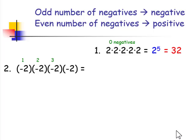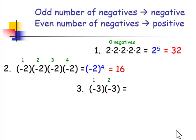In our next example, we have 4 negatives, which is even, so our result is a positive 16. In our third example, we have 2 negatives being multiplied, which is even, so our result is a positive 9.